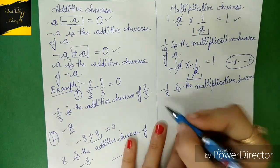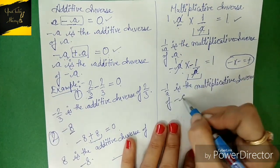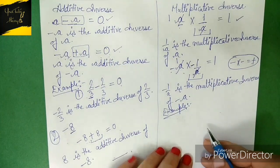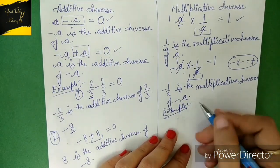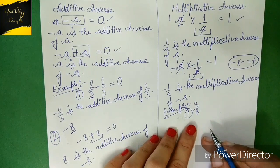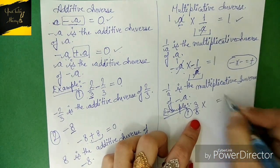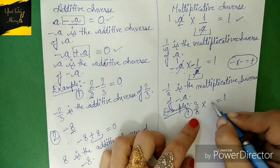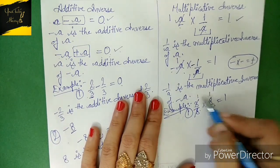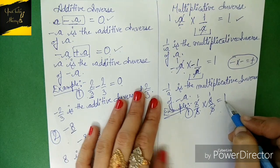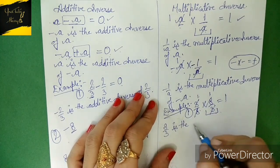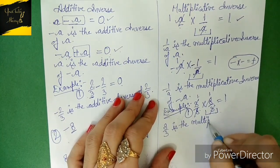Let me take a practical example. Suppose I'm taking 3/8. What should be multiplied to 3/8 to get a result of one? We need to multiply by '8/3' so that three cancels with three and eight cancels with eight, giving us one multiplied by one equals one. So '8/3' is the multiplicative inverse of '3/8'.